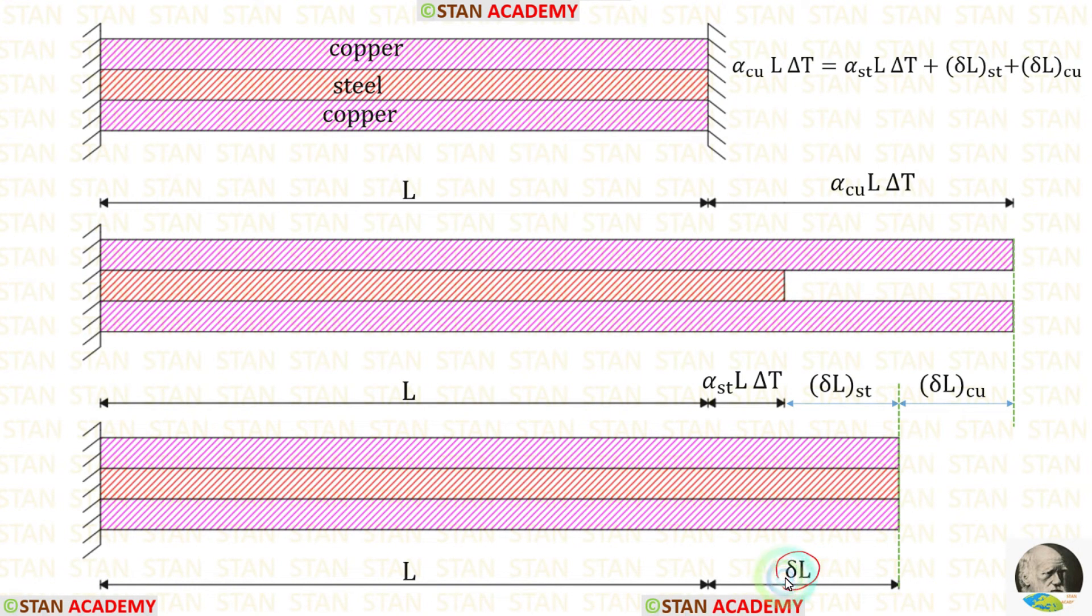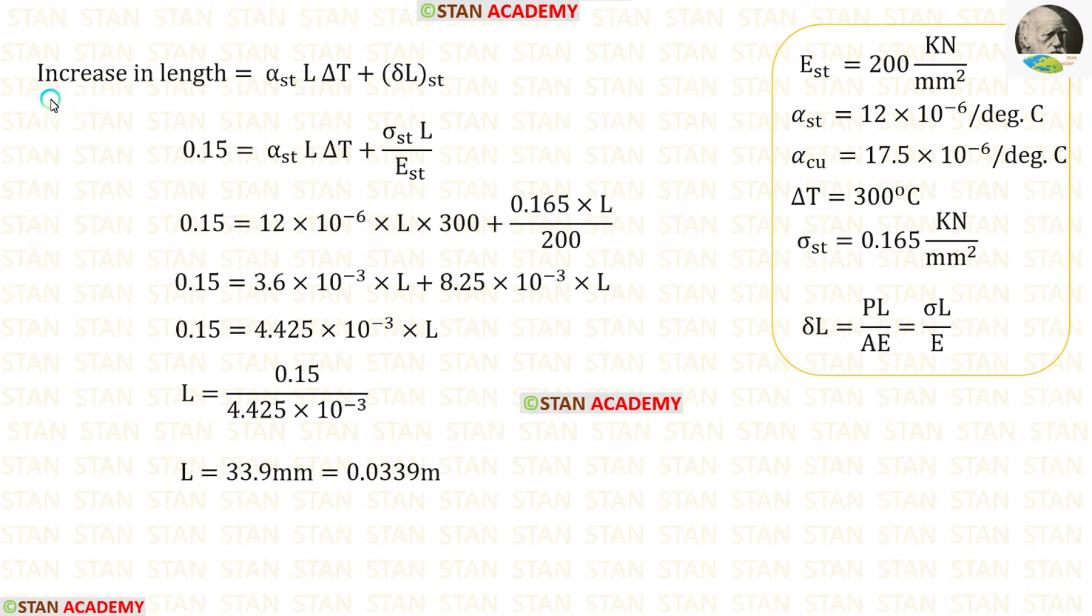The change in length delta L is given in the question. We have to find the length L. We know that the change in length delta L is equal to alpha St L delta T plus delta L St. Using this concept, we can find the length L. The change in length is given in the question as 0.15 millimeter. For delta L St we can use this expression which we have made earlier. Let us apply the values of Est, alpha St, delta T and sigma St. After the calculation, we will get L which is equal to 33.9 millimeter or 0.0339 meter.